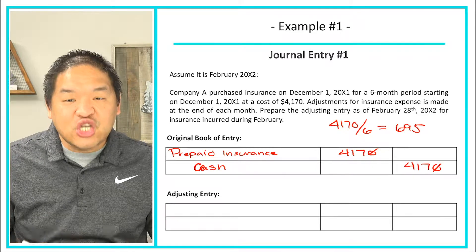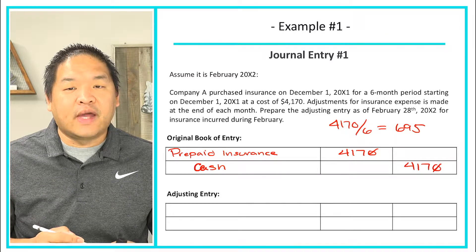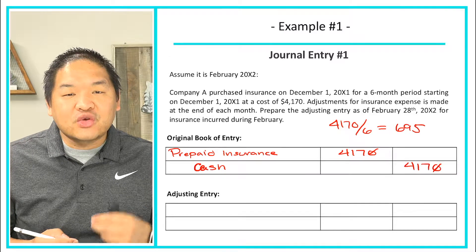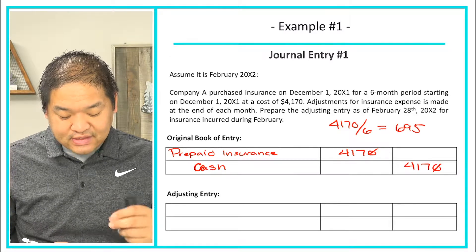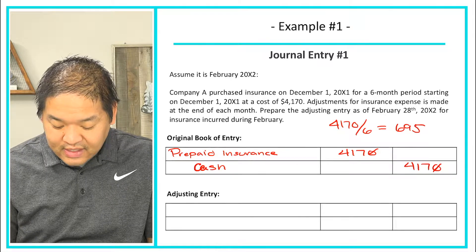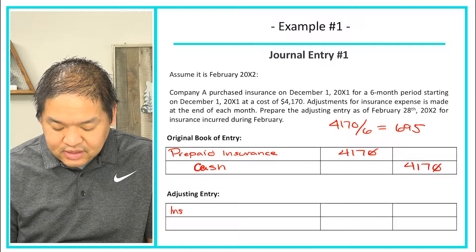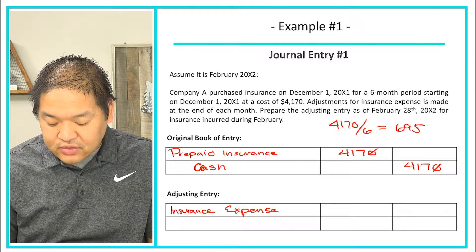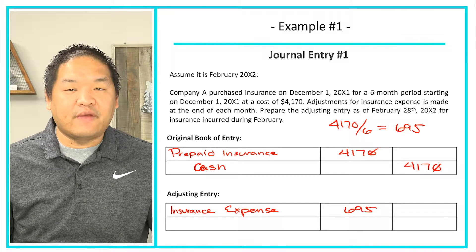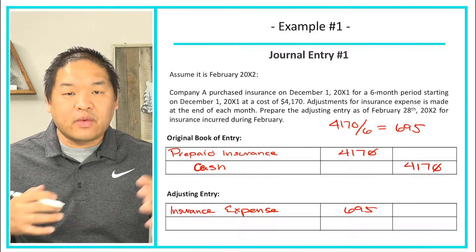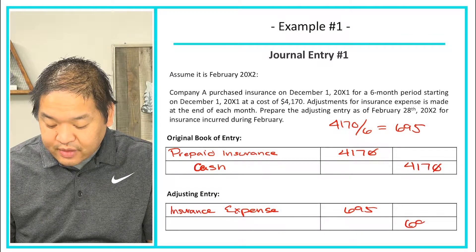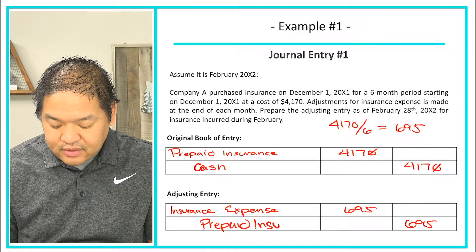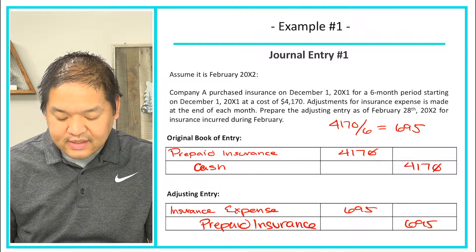At the end of February we make the adjusting journal entry. We incurred an expense, so we increase the expense — increases in expenses are a debit. We debit insurance expense for $695. We then credit prepaid insurance for $695, taking it out of prepaid rather than cash because we already paid. That is our adjusting entry for prepaying an expense.